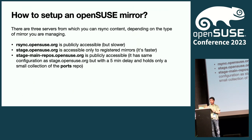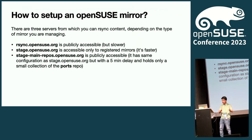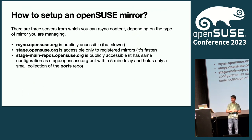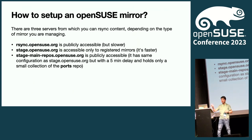There are three different rsync servers to synchronize from. First is rsync.opensuse.org — publicly accessible, but slow due to high traffic. Second is stage.opensuse.org — really fast, but accessible only to registered mirrors. You need to contact the OpenSUSE heroes to gain access. I'll show you how to do that in a later slide.